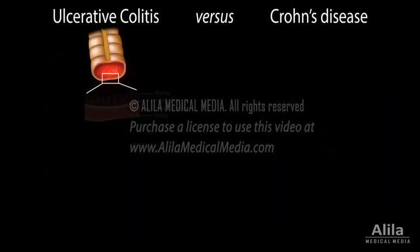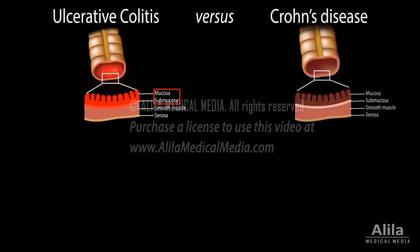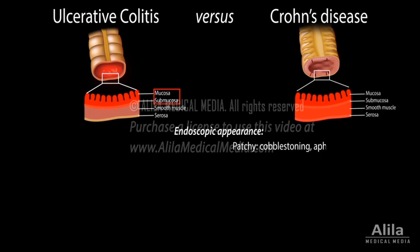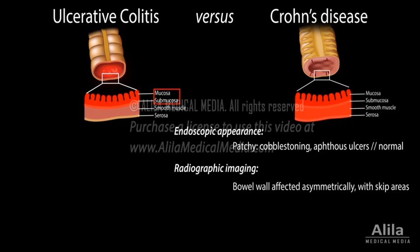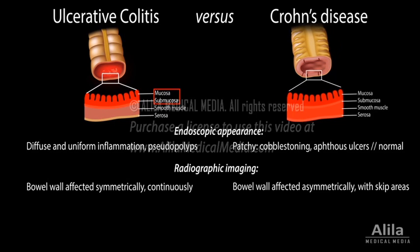Ulcerative colitis only involves the inner lining of the intestinal wall, while Crohn's disease extends to its entire thickness. In imaging studies, the mucosa in Crohn's disease has a patchy appearance, with alternating regions of diseased and normal tissues, and the bowel wall is affected asymmetrically. In ulcerative colitis, mucosal inflammation is diffuse and uniform, and the bowel wall is affected symmetrically.